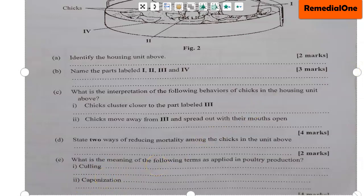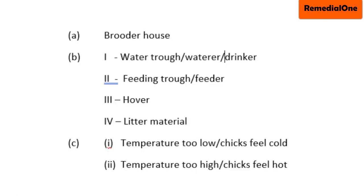Now let's look at the solution. The first question was to identify the housing unit, and the right answer is brooder house. So the housing unit is a brooder house.